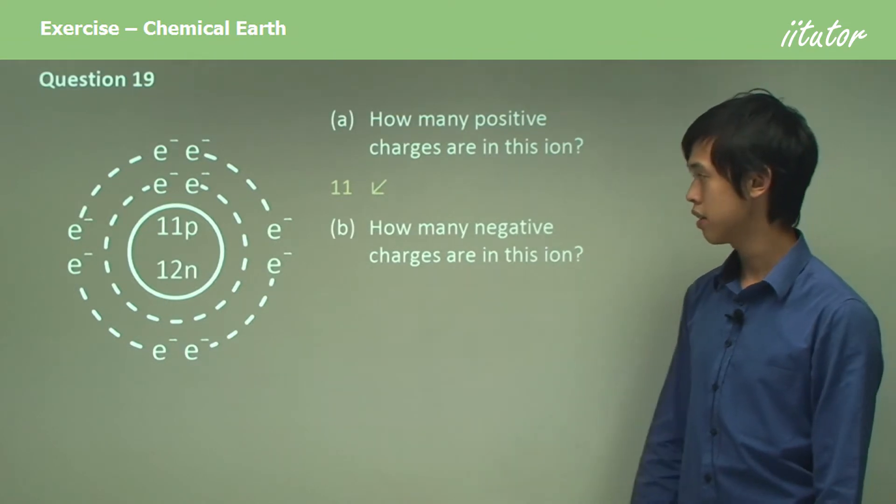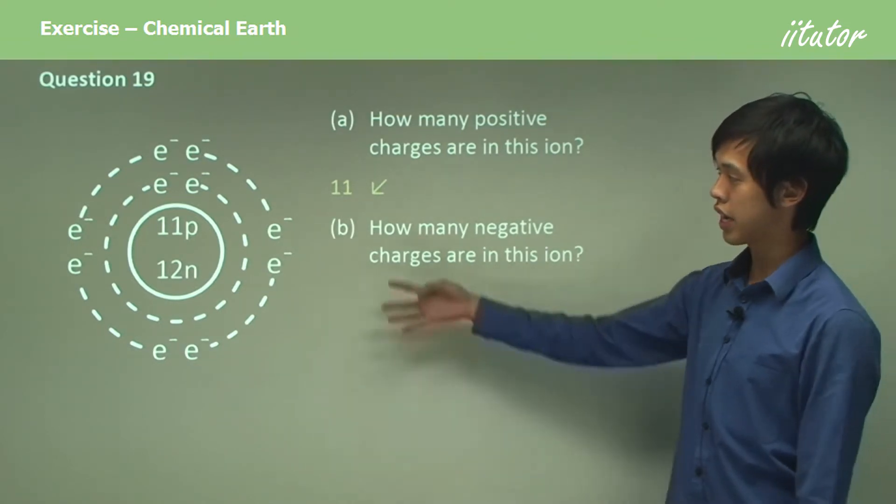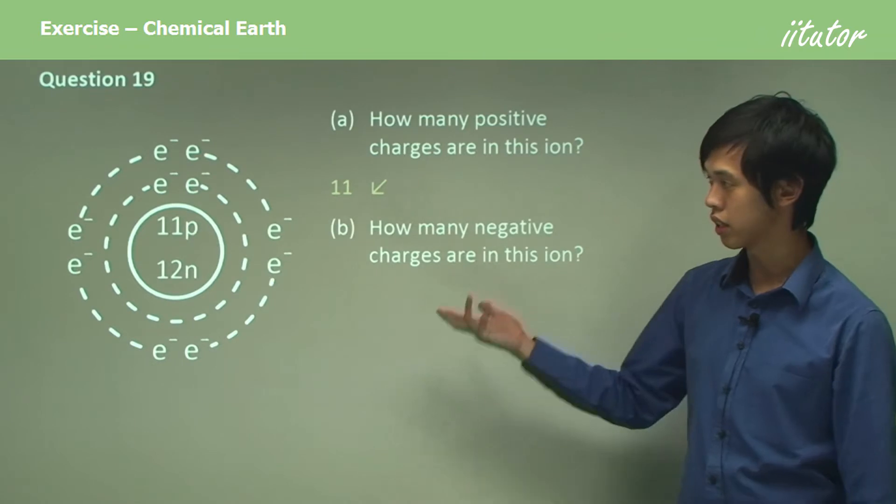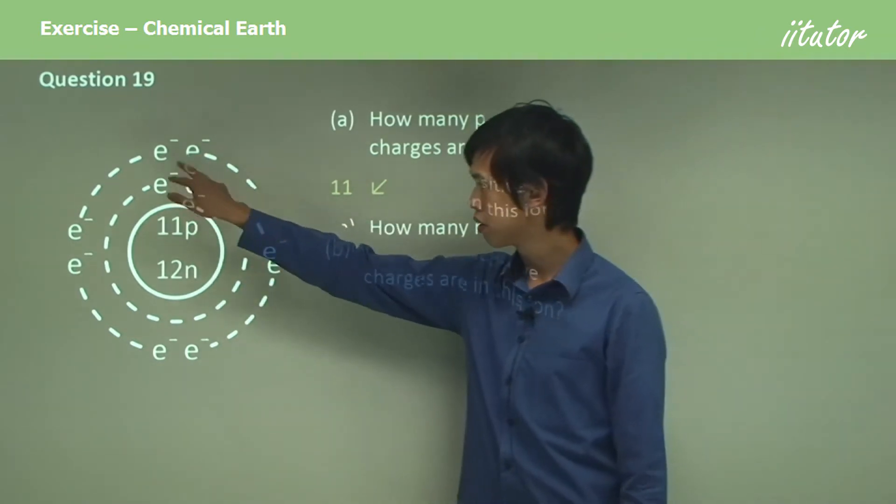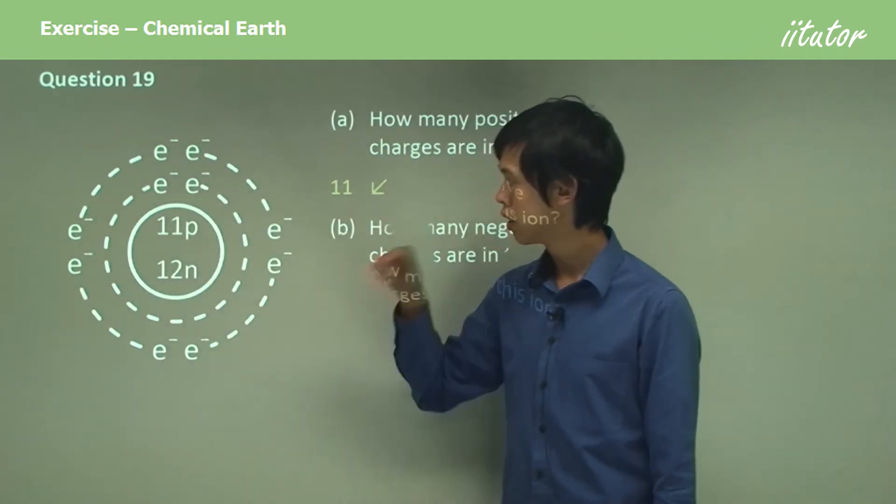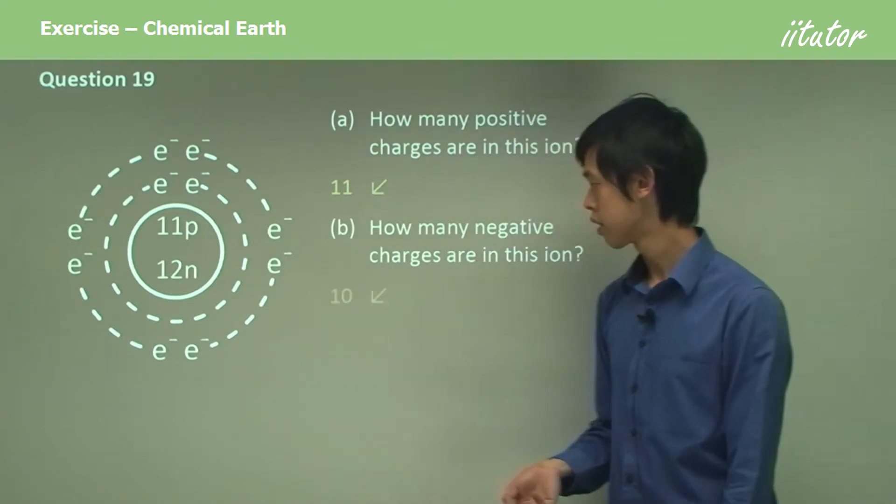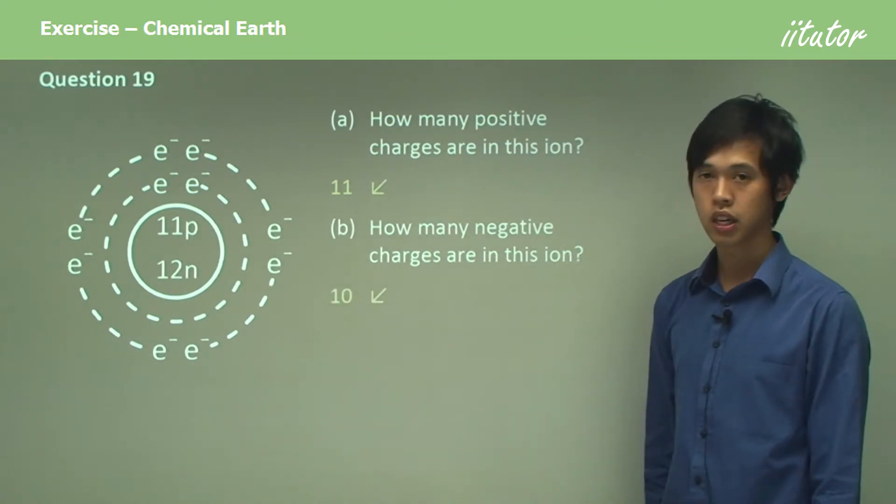How many negative charges are in this ion? Well, you can just stop for a second, pause, and count each one, each electron. There are two in each shell, so there are 10. So there are 10 negative charges.